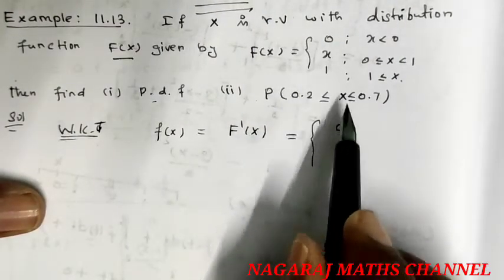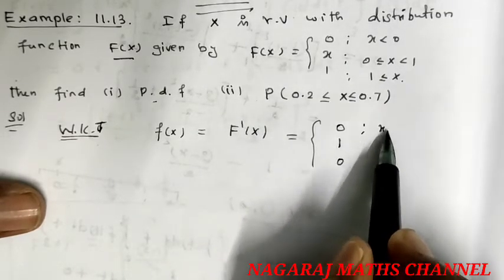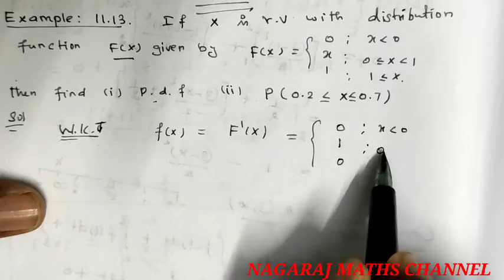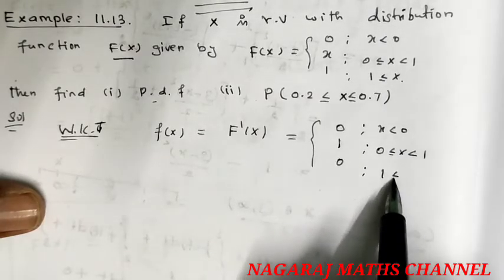The first case is 0 when x is less than 0. In the case where 0 is less than or equal to x less than 1, and in the case where 1 is less than or equal to x.